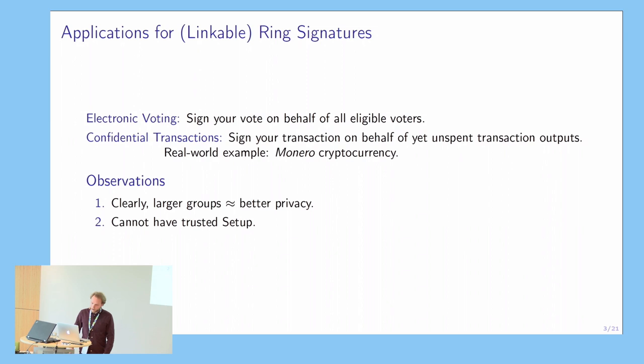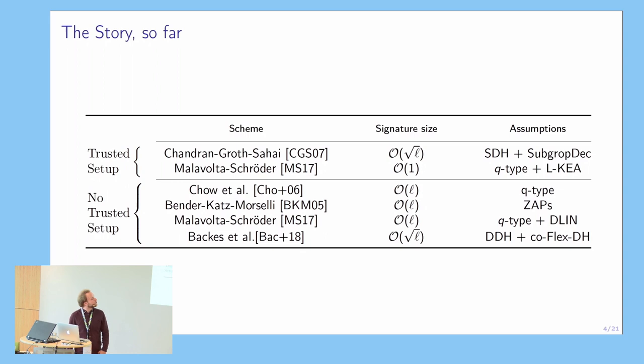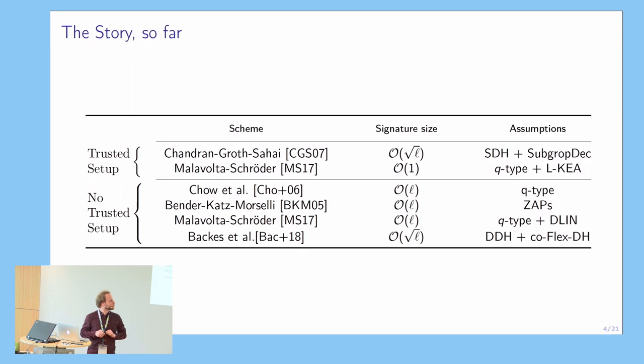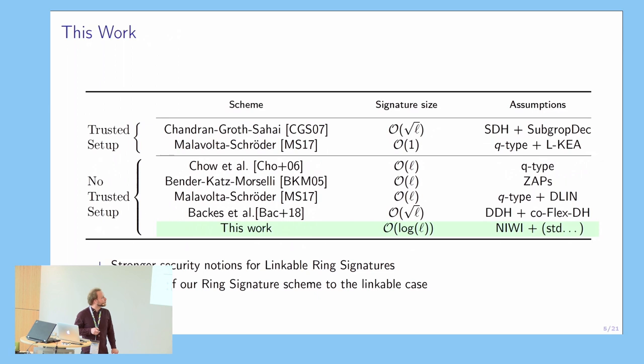This slide gives a short overview of some of the work on ring signatures, excluding schemes in the random oracle model. What you see is that if we try to avoid trusted setup, we really had for the longest time signatures that were linear in the number of users in the ring. Obviously if we can have shorter signatures we can sign for larger groups, increasing our privacy. So in this work, for the first time ever, we present logarithmic size ring signatures without trusted setup, and we can instantiate them entirely from standard assumptions.